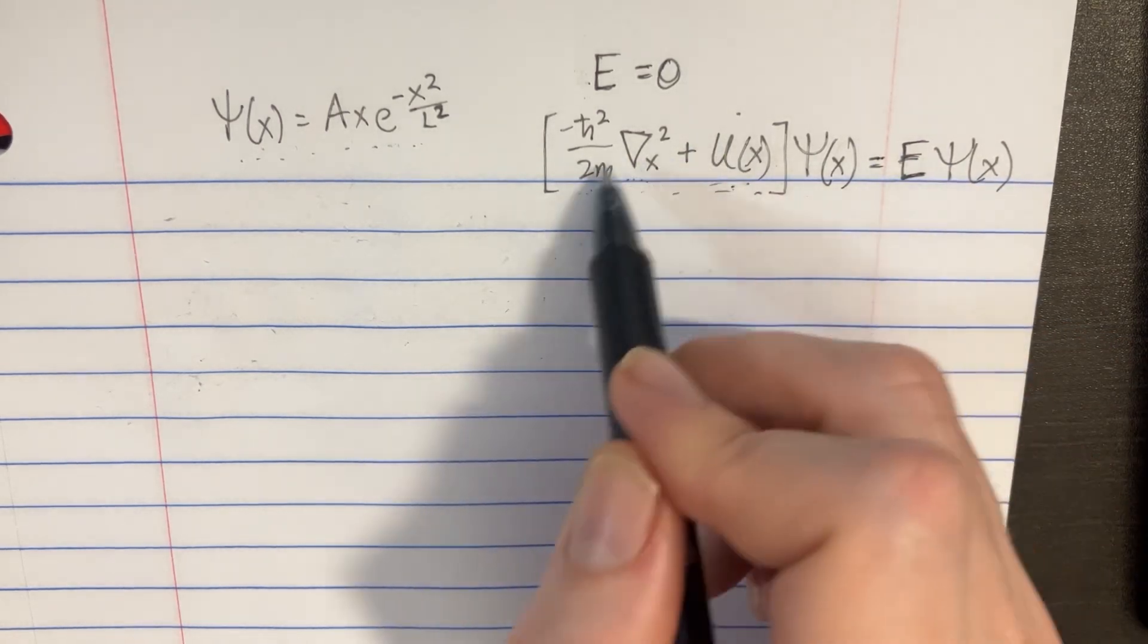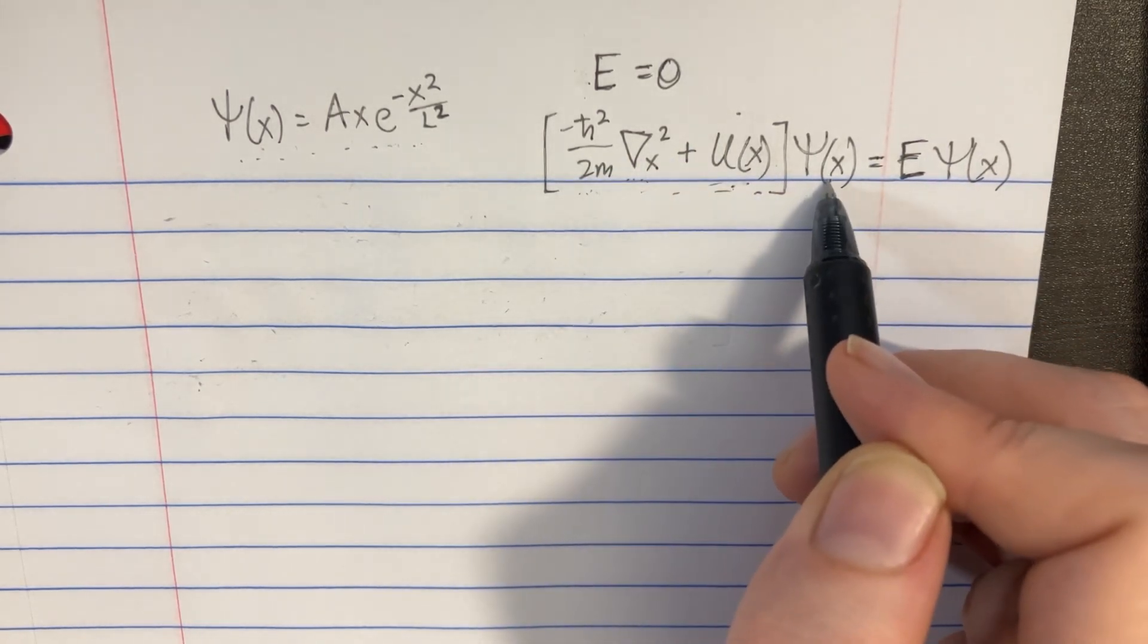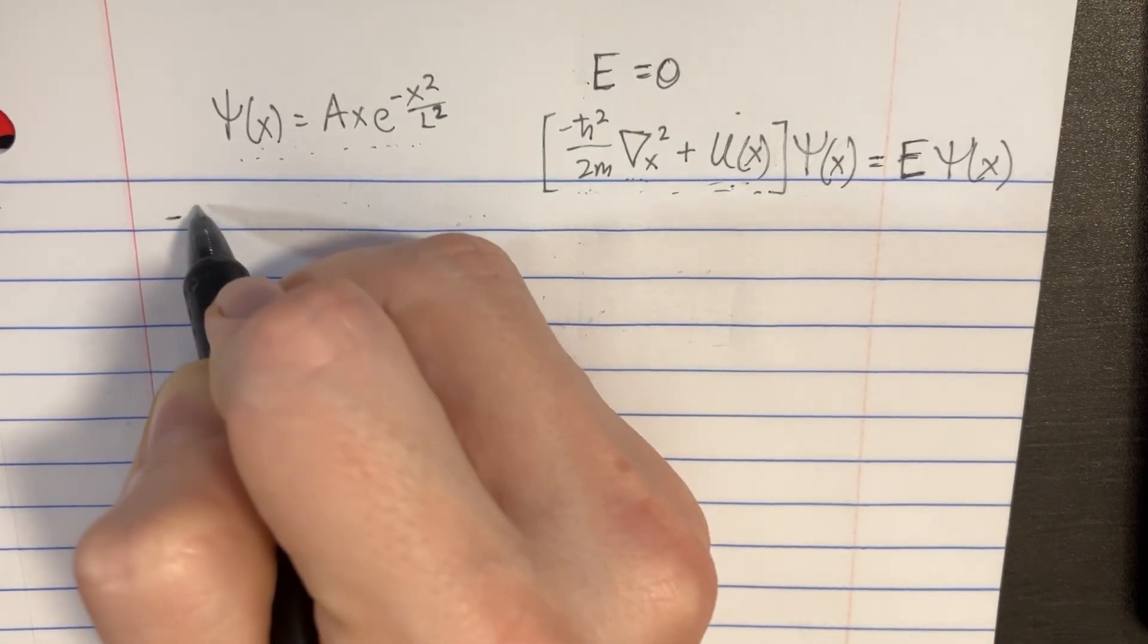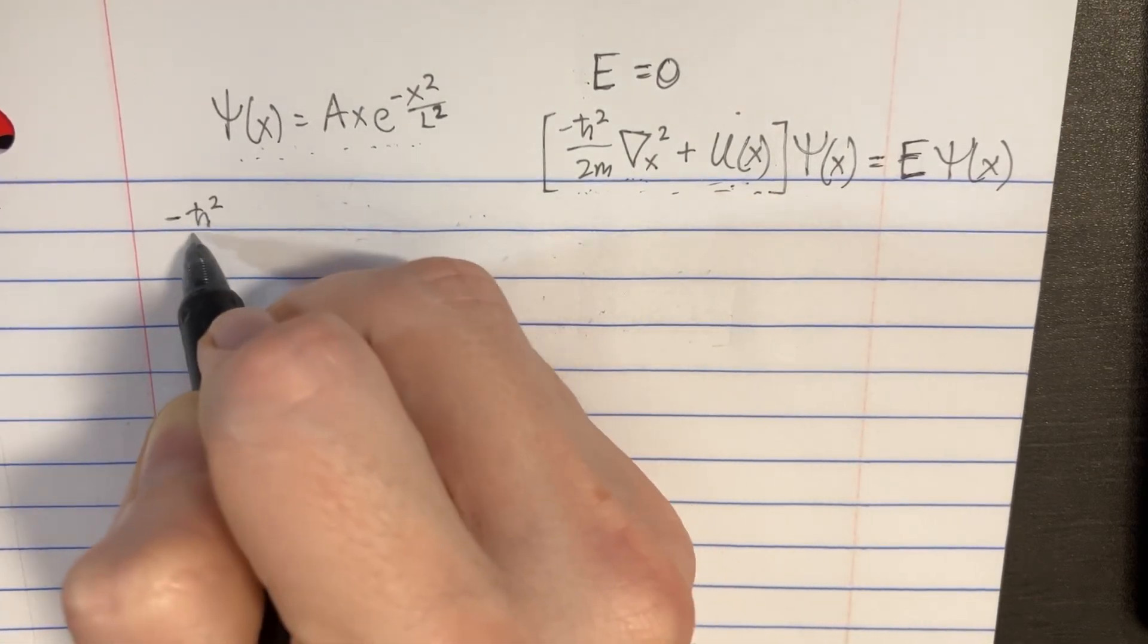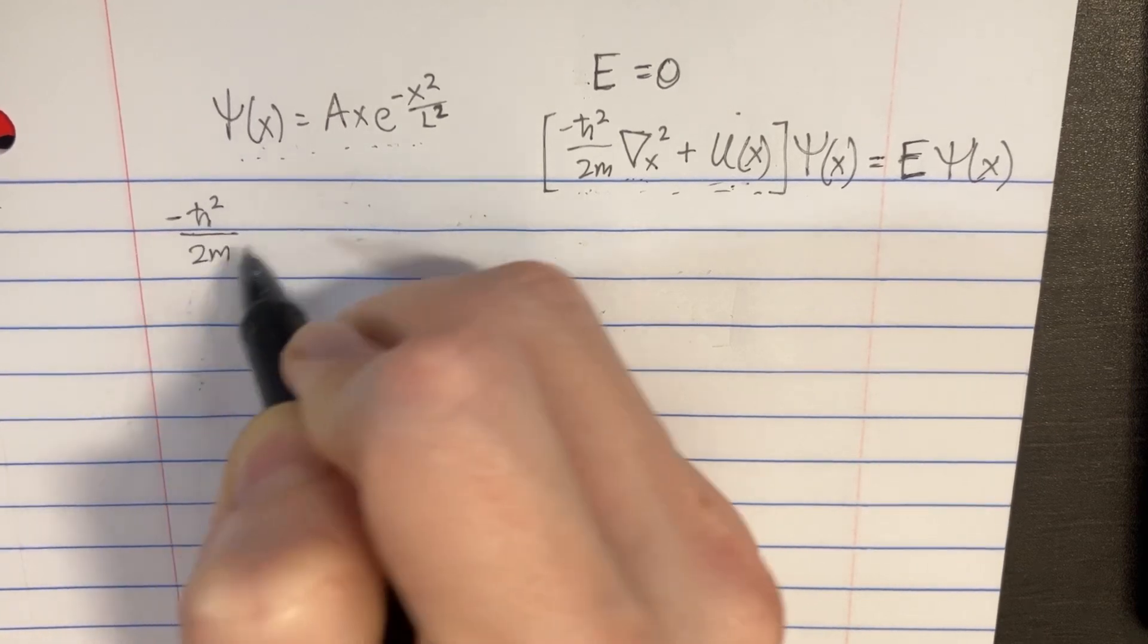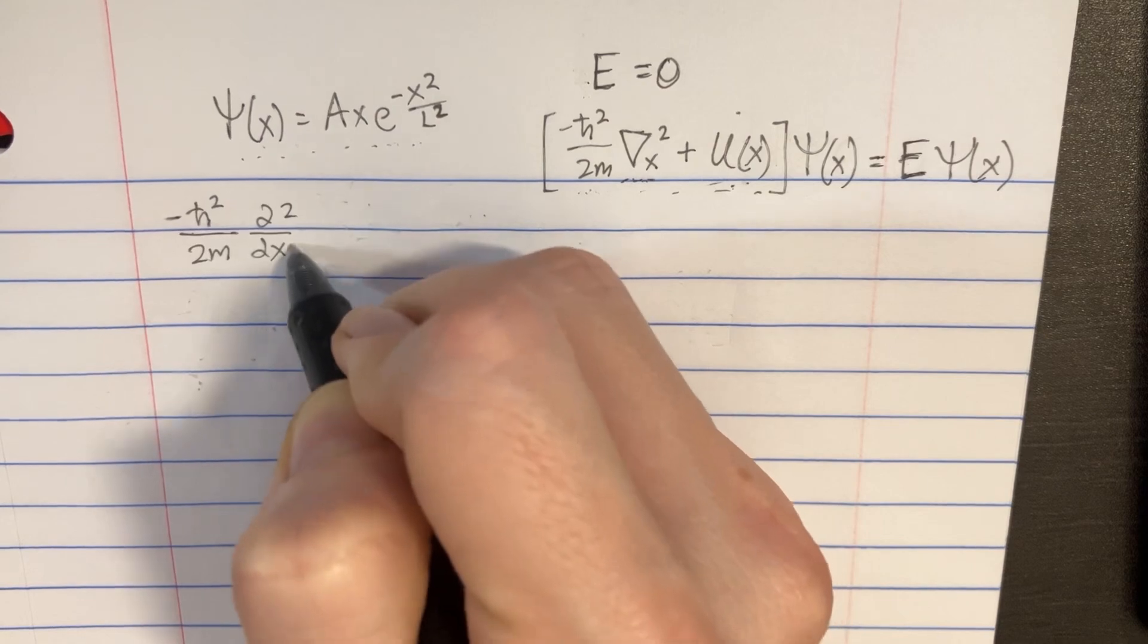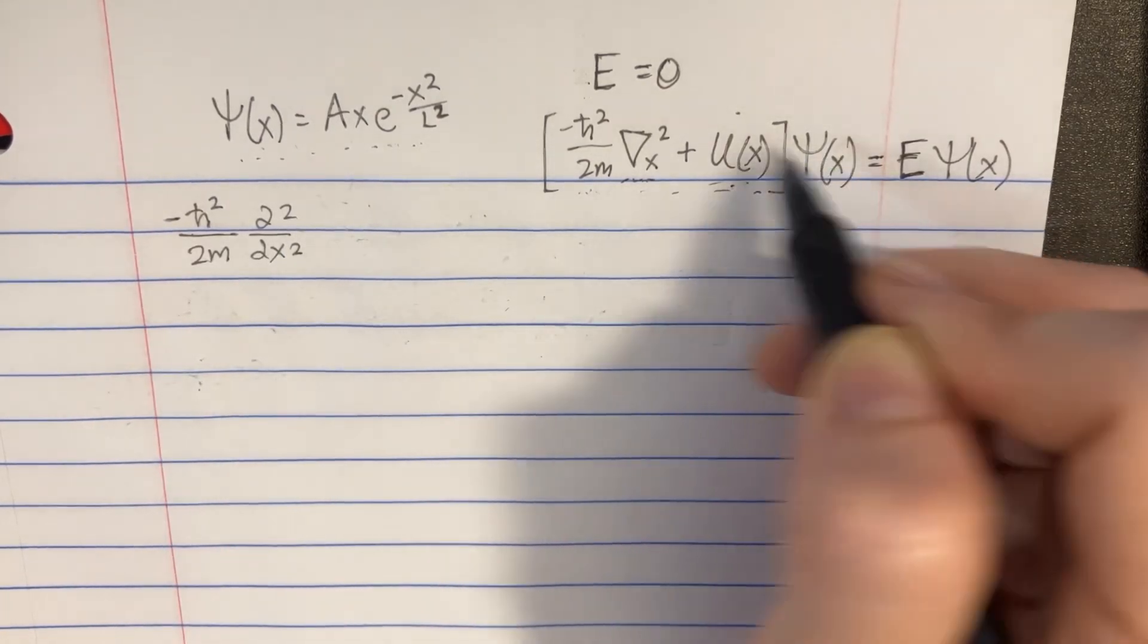So once we distribute the Hamiltonian across this wave function, then we should be able to get something like this, the negative h bar squared over the 2m, and then this is going to be a second partial derivative over here with respect to position acting on this wave function.